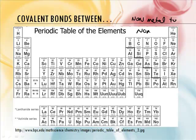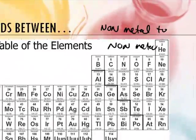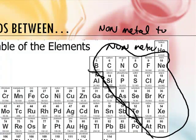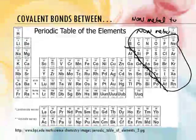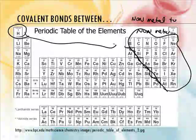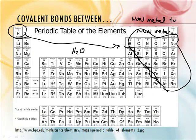So where would we find those? Those are to the right of the staircase. It's going to bond between these non-metals and themselves — and hydrogen too, since hydrogen is not a metal. A classic example: water, H2O. Water is a non-metal bonded to a non-metal. H's and O's are both non-metals and they share their valence electrons.